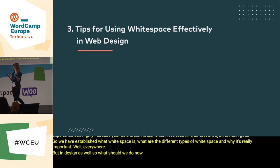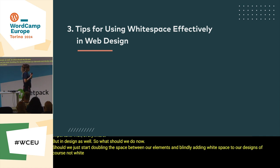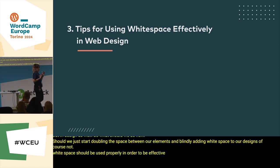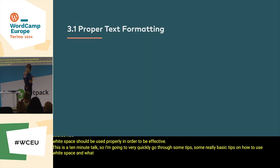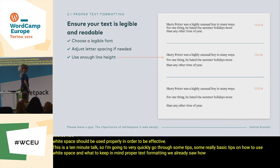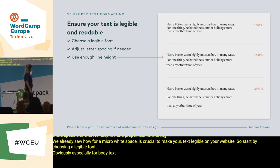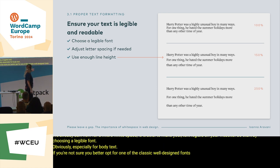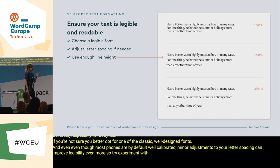So what should we do now? Should we just start doubling the space between our elements and blindly adding white space to our designs? Of course not. White space should be used properly in order to be effective. I'm going to very quickly go through some basic tips on how to use white space and what to keep in mind. Proper text formatting: micro white space is crucial to make your text legible. Start by choosing a legible font, especially for body text. If you're not sure, opt for one of the classic well-designed fonts. Even though most fonts are by default well calibrated, minor adjustments to your letter spacing can improve legibility even more. Try experimenting with adding up to 1.5% of spacing to your layout and check whether it makes it easier to read.